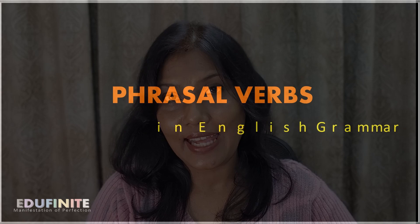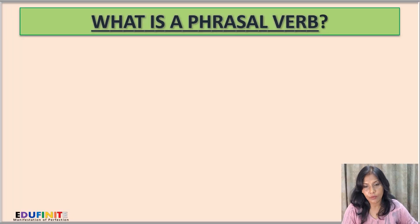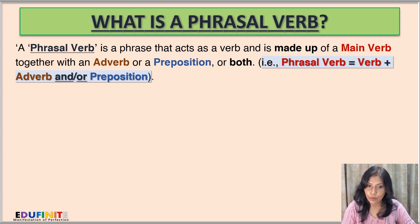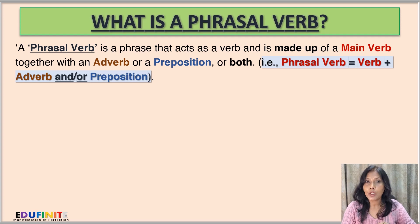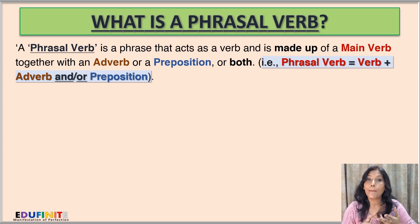Phrasal verbs. Let's delve into the topic. What is a phrasal verb? A phrasal verb is a phrase that acts as a verb and is made up of a main verb together with an adverb or a preposition or both. That is, its structure is: phrasal verb = verb + adverb, or verb + preposition, or verb + adverb + preposition.